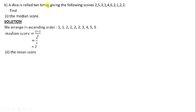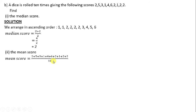To find the mean score, we are supposed to add all the scores and divide by the number of times the die was rolled. So our mean score equals the sum of all scores divided by the number of rolls. When we add all the scores, we get 28. The number of times the die was rolled was 10. Our mean score is 2.8.